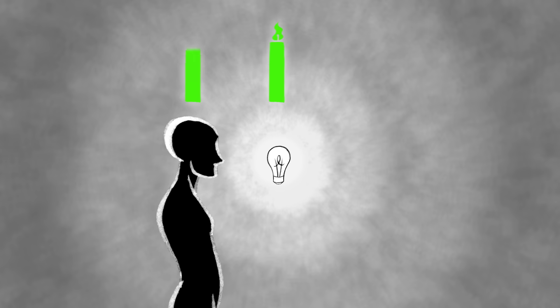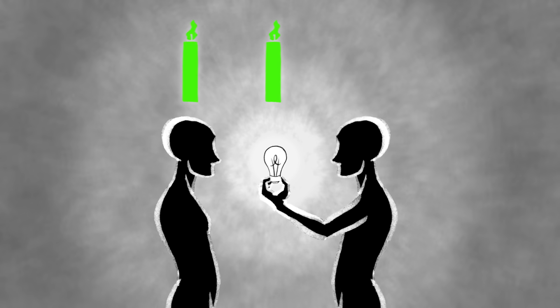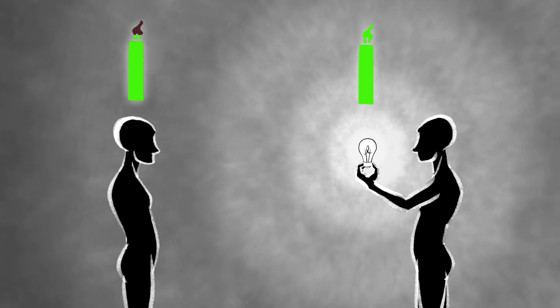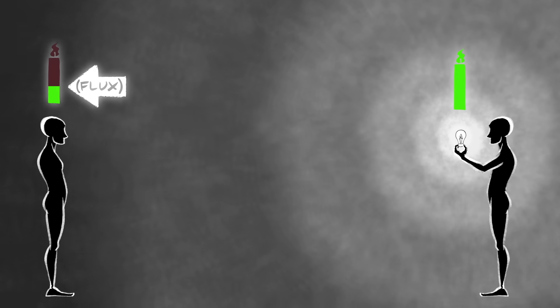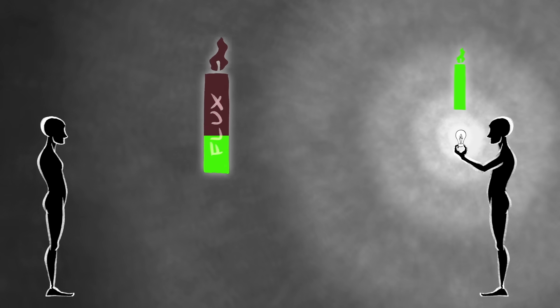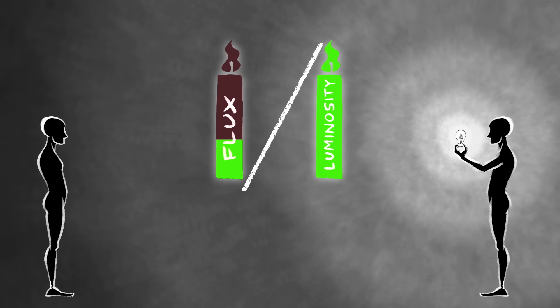Standard candles are objects whose intrinsic brightness or luminosity we know really well. For example, if you know how bright your light bulb is, and you ask your friend to hold the light bulb and walk away from you, you know that the amount of light you receive from your friend will decrease by the distance squared. So by comparing the amount of light you receive to the intrinsic brightness of the light bulb, you can then tell how far away your friend is.